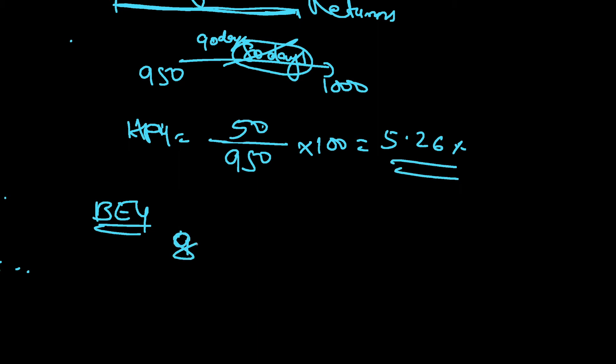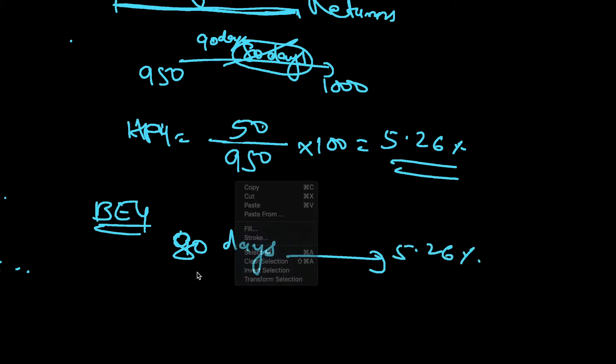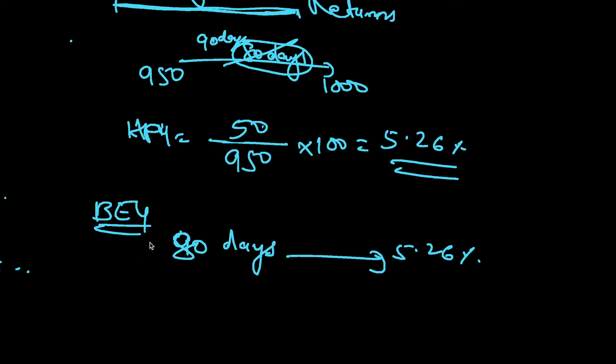In 80 days I am getting 5.26% - this is what I have got from holding period yield. How do I convert this into bond equivalent yield? Bond equivalent yield will calculate for 365 days and it will use the same present value. Based on this, the returns are calculated. So 80 days is 5.26%, for 365 days how much?